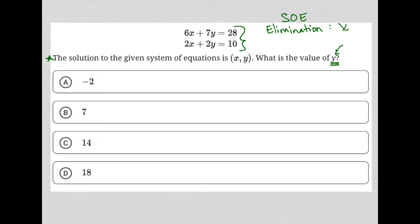In order to eliminate x, I will multiply the second equation by -3. Because in doing so, I'd end up with -6x here, right? By distributing -3. And then -6y, and that would be equal to -30.